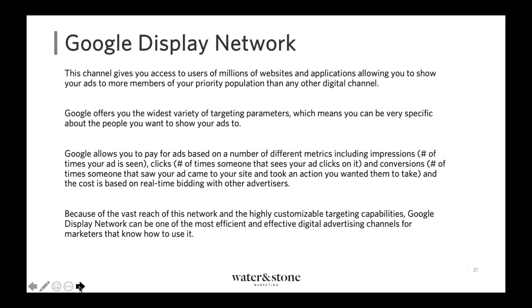Google Display Network gives you access to the most people of any media channel — hundreds of millions of users across millions of websites. It also offers the widest variety of targeting parameters, so we can get a very specific audience and create a good profile of the MSM we want to reach. Google also lets you pay for ads based on the most different metrics of any platform: impressions, clicks, or even conversions. If you're tracking conversions through Google Tag Manager and Google Analytics, you can pay, say, $1.30 to have someone fill out a form, and you're only charged based on how many people actually do.